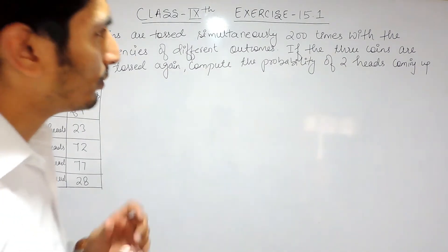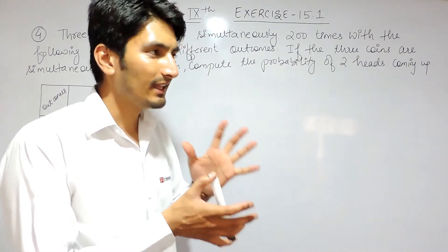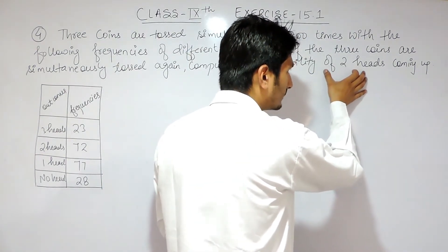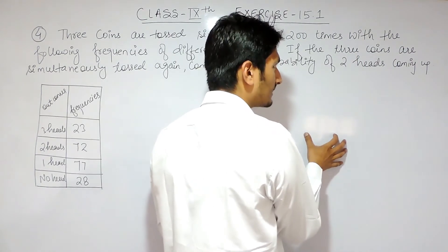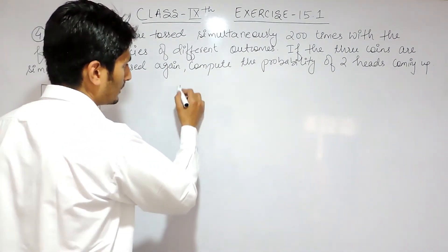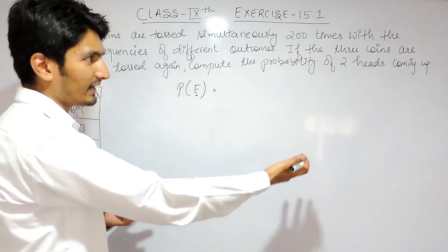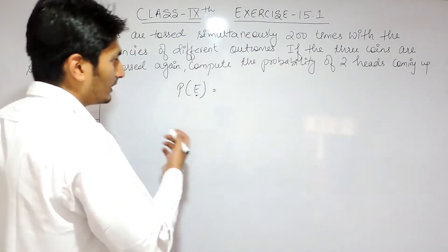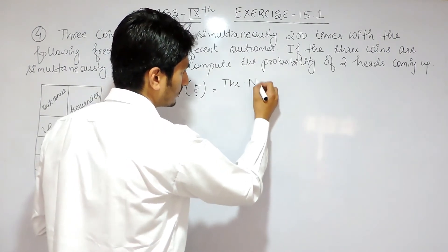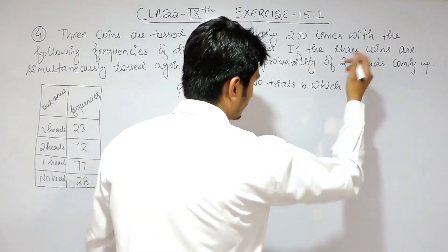One thing is very important here: whenever you have to find the probability of something, the number of times that thing happens upon the total number of trials will be our probability. That is the same formula we have been learning from the first question — the probability of an event, which could be two heads, three heads, one head, or no heads.